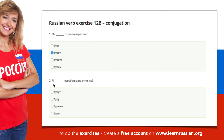The next one. Я — I. Зарабатывать — to earn. Отлично — perfect. The options are: будут, буду, будешь, будет. Which form should we take? Я буду зарабатывать отлично. I will earn perfectly.